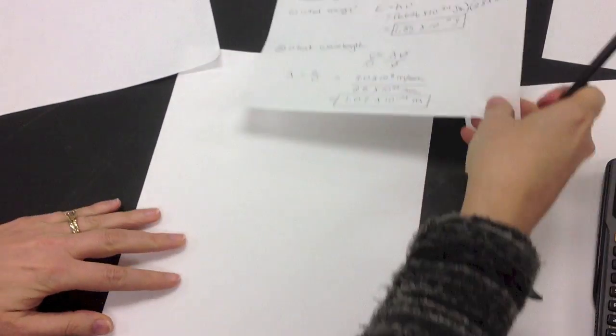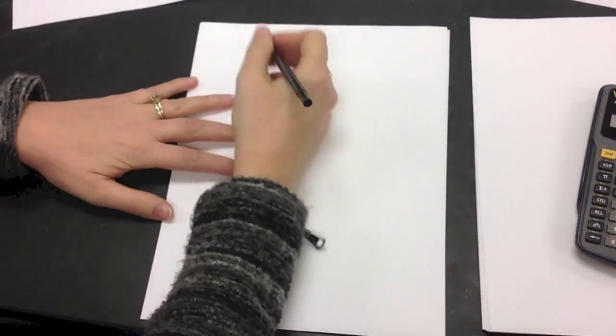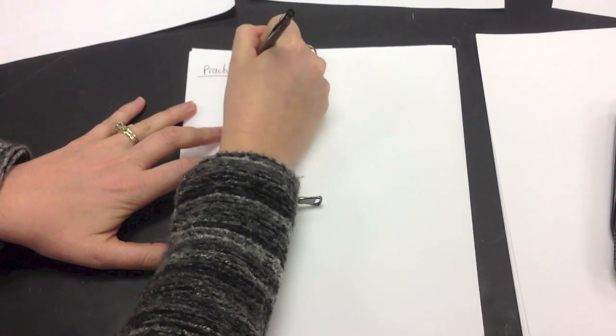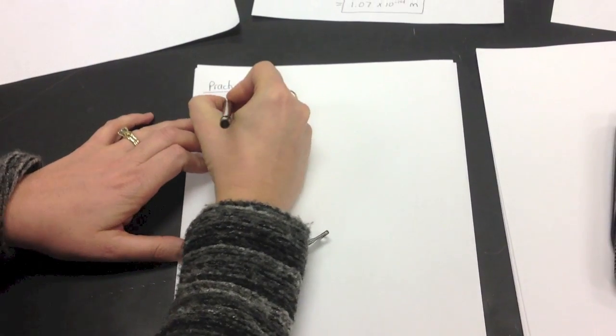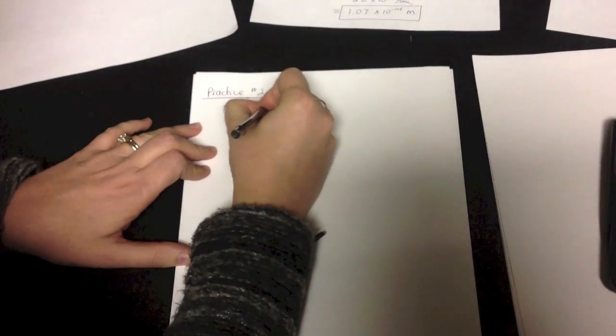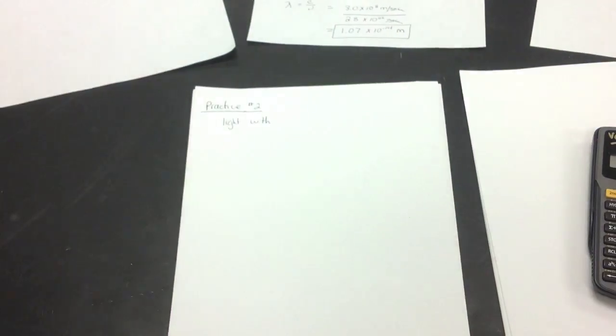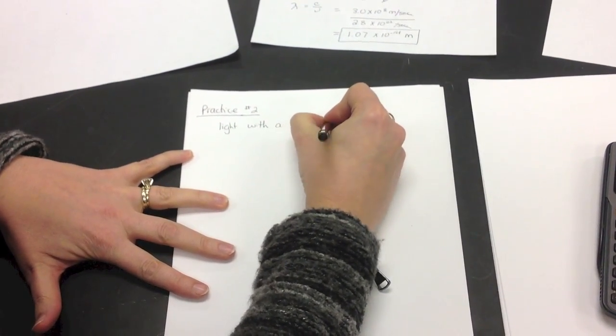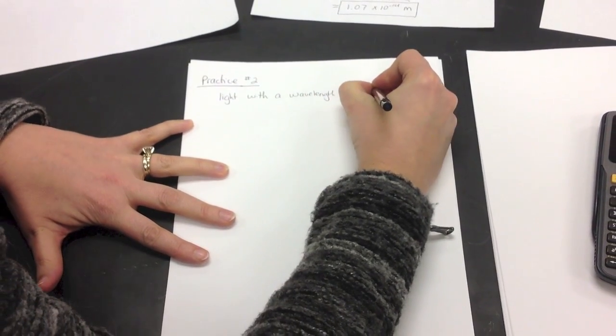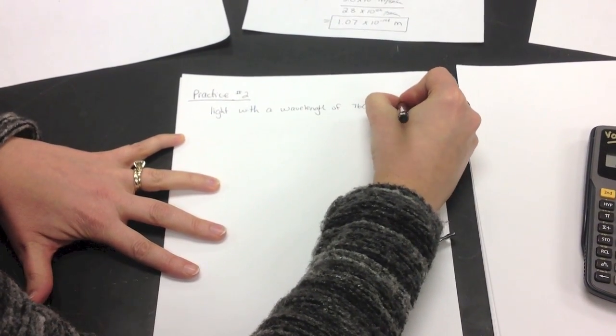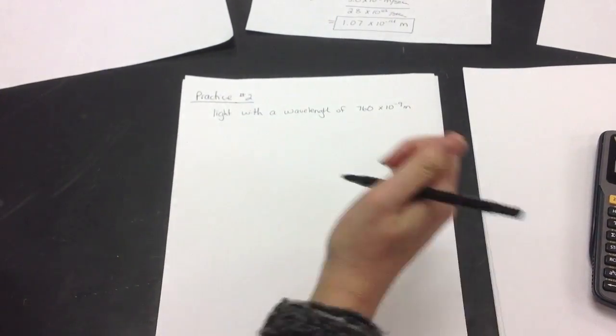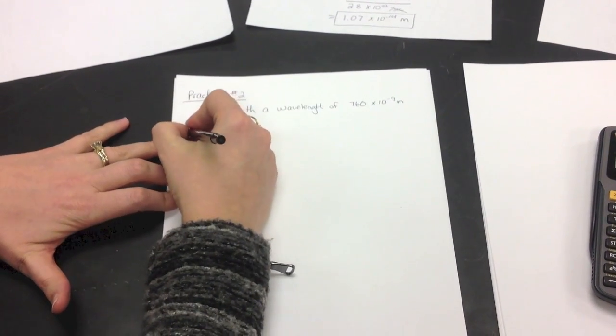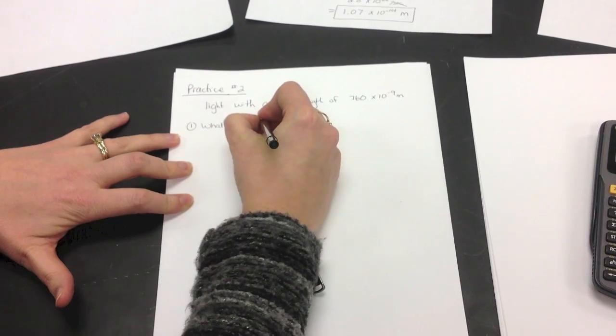Now, let me just do one more practice problem, because what about if you don't start off with frequency? What about if I give you wavelength? So let's take another example, practice number two. Let's say I have light with a wavelength of 760 times 10 to the negative 9th meters. That's often called 760 nanometers, which is in the visible spectrum, just at the edge of the visible spectrum. So, number one, what is the frequency?